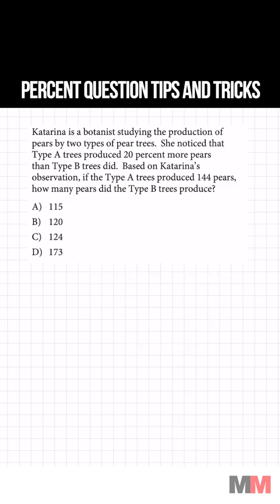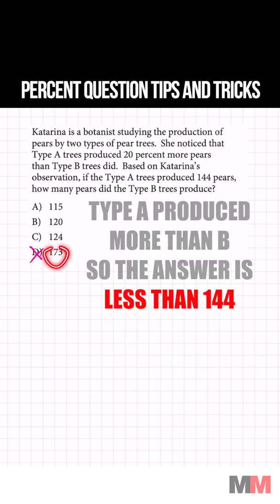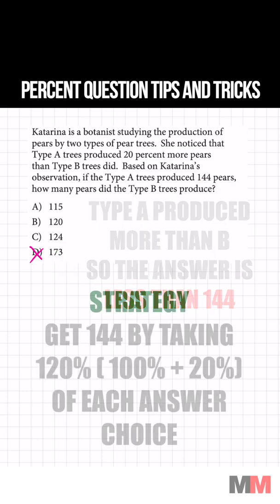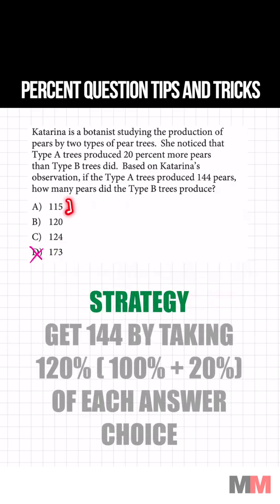I can already tell that one of these are wrong because 173 is more than 144. If I take 20% of this number and add it to itself, it should produce 144 if that is the answer.